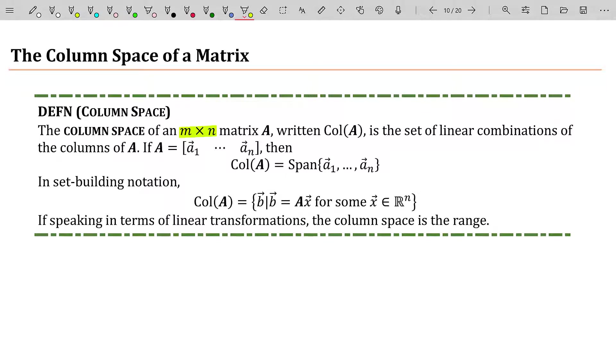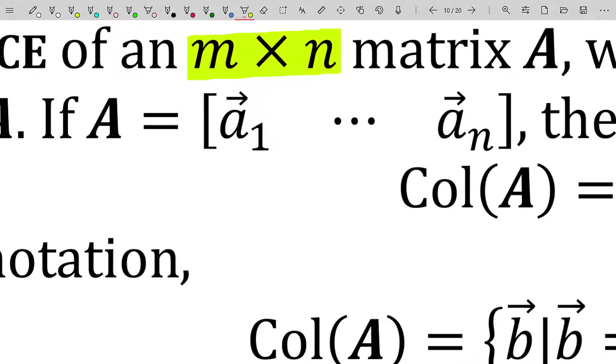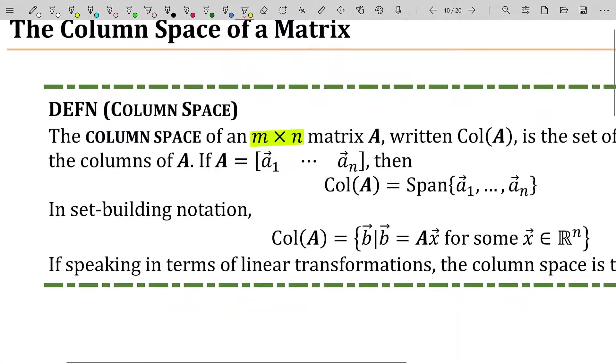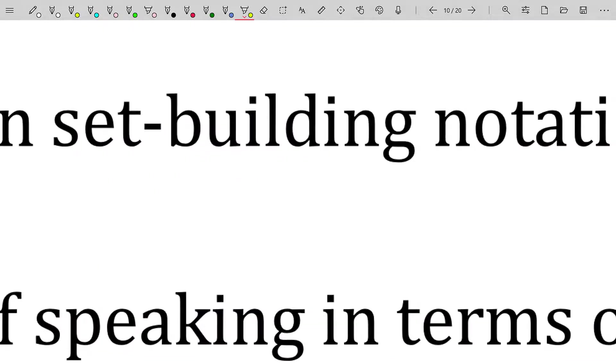If A is the matrix [a₁, ..., aₙ] where those are column vectors, then the column space of A is just the span of those vectors. In set-builder notation, the column space of A equals the set of vectors b such that b equals Ax for some x in ℝⁿ.